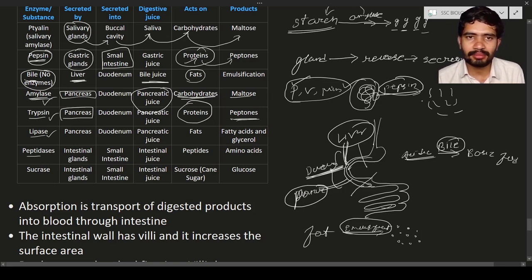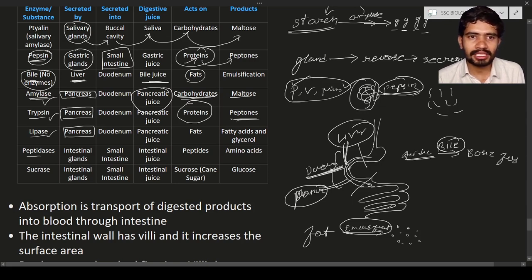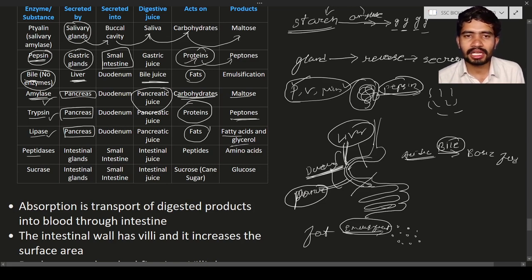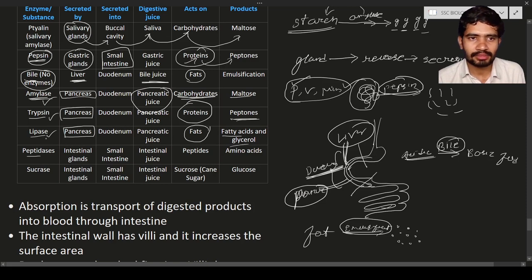The pancreas also produces the lipase enzyme. When lipase acts on fats, the fats are broken down into fatty acids and glycerol. These fatty acids and glycerol are the broken products of fats produced through digestion by lipase.